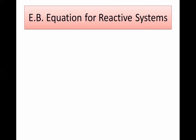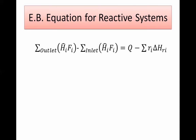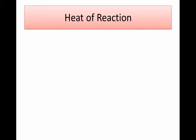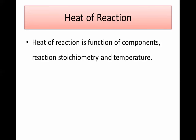The only difference when we move to the reactive system is a term called the heat of reaction. The energy balance for a reactive system includes the rate of reaction multiplied by the heat of reaction. This rate is the same rate of reaction we talked about in the material balance calculations a few videos ago. The rate is in moles per second and H is in joules per mole, so multiplying gives joules per second, making the equation dimensionally consistent.